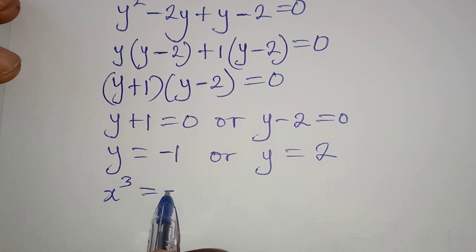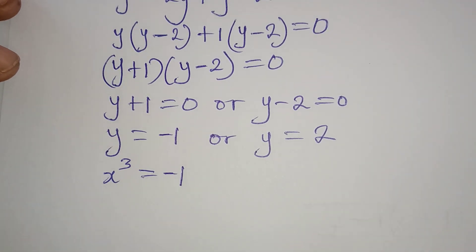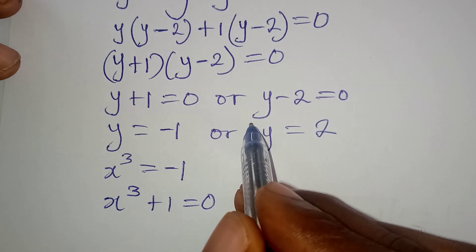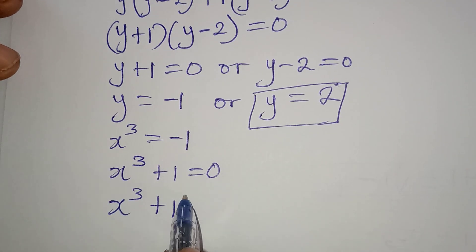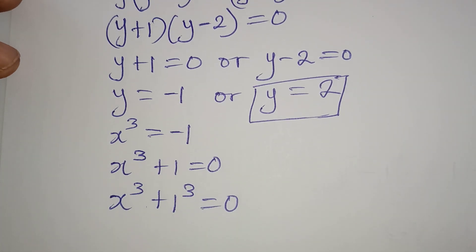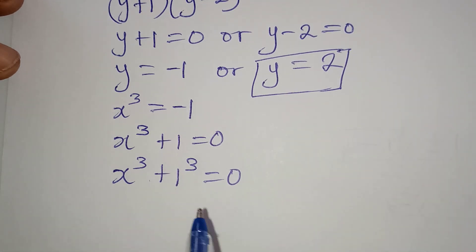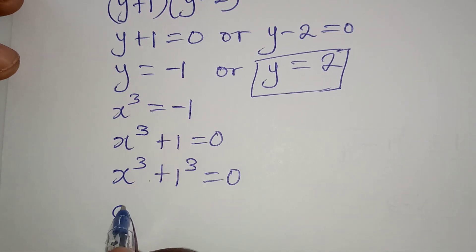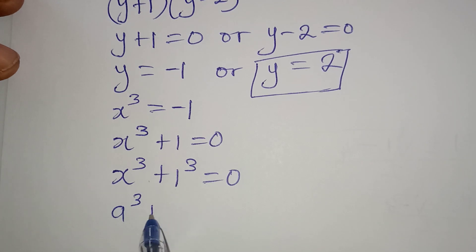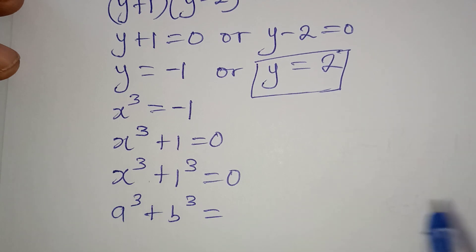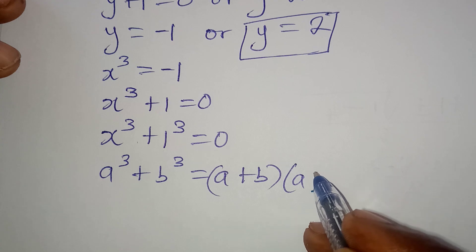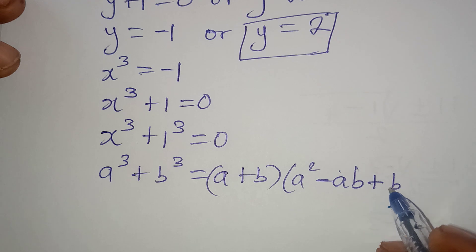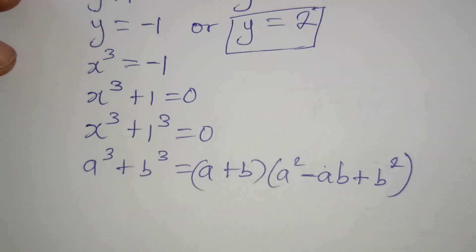Starting with y = -1: we have x to the power of 3 plus 1 equal to 0. This is the same as x to the power of 3 plus 1 to the power of 3 equal to 0, making sure both terms have the same power. Remember 1 to the power of 3 is still 1. There's a rule: if I have a to the power of 3 plus b to the power of 3, this is the same as (a + b)(a squared minus ab plus b squared).